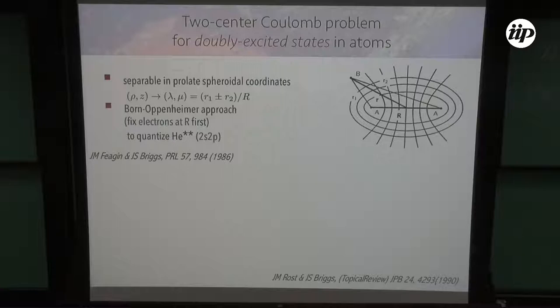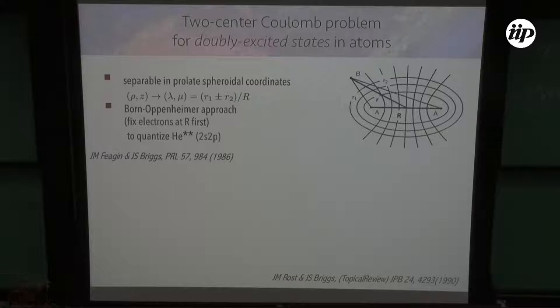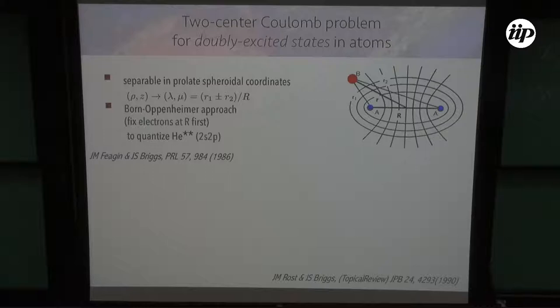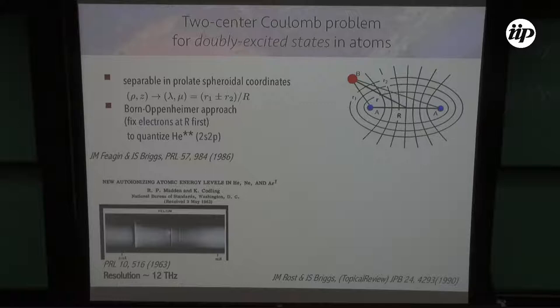Now I can invert the role of electrons and nuclei. Instead of nuclei, I take two electrons, and the electrons are replaced by a nucleus — so you have an atom with two electrons and one nucleus. Why would you fix the two electrons? This is where the Rydberg character becomes very important: if I have highly excited states, then the two electrons repel each other, and that stabilizes the inter-electronic axis. You can use the same symmetries as in H2+ to describe doubly excited states of atoms.